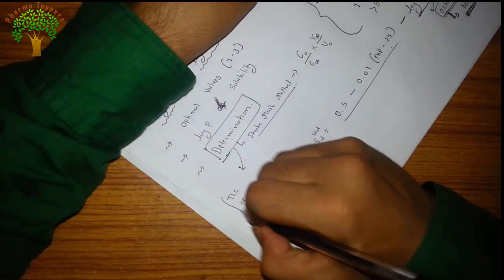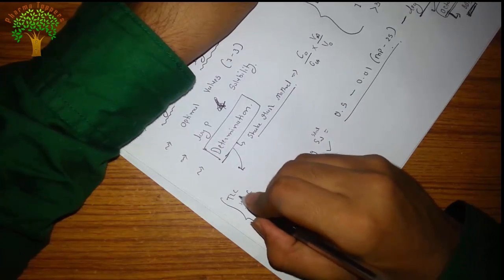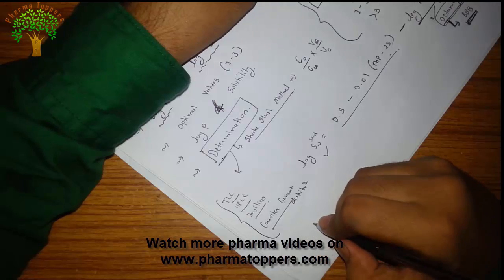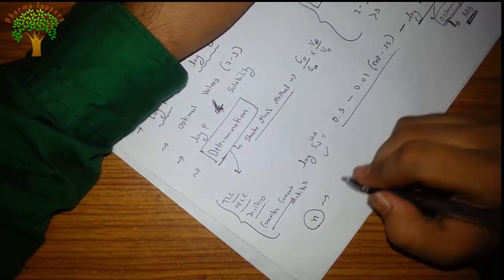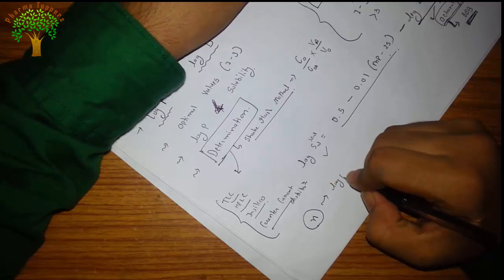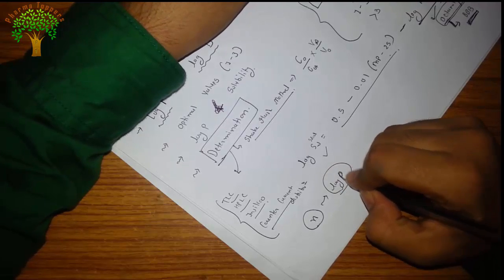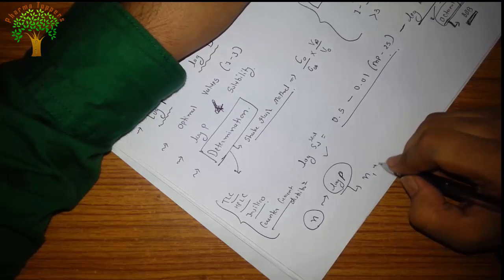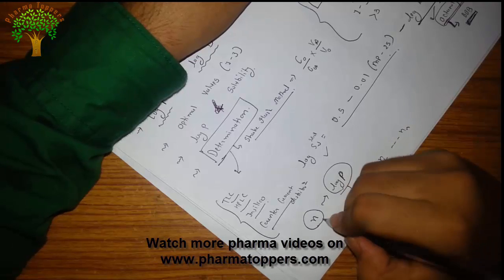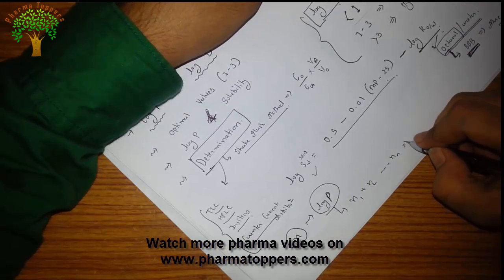Then counter-current distribution. One can also go for the grouping method: if n number of groups are there, each group has assigned some value of log p on the basis of their lipophilicity, and finally summing all of them, n1 plus n2, will lead to your final log p value.